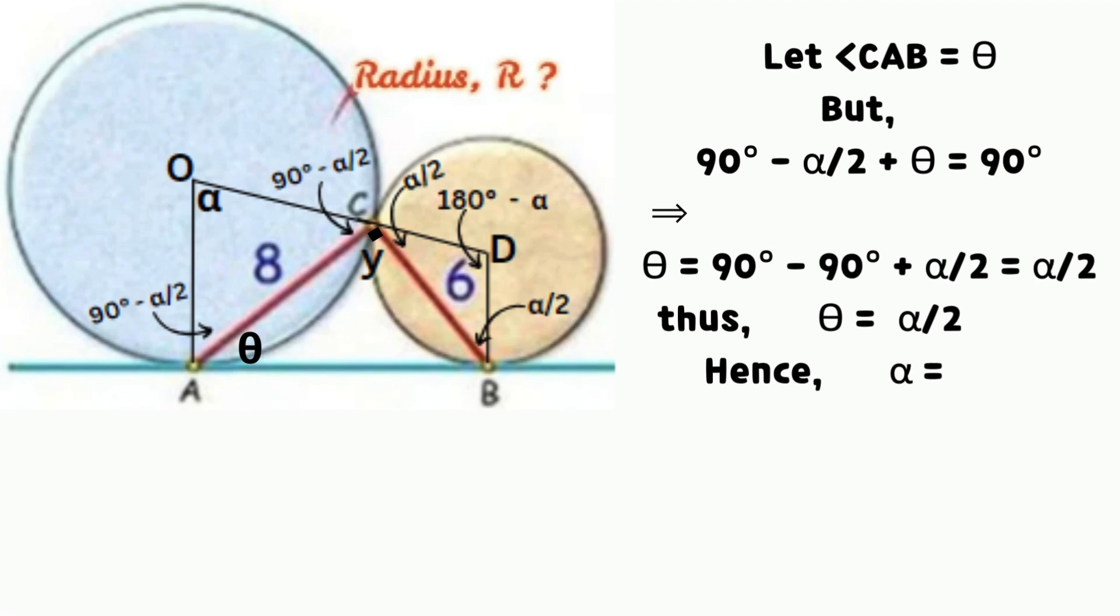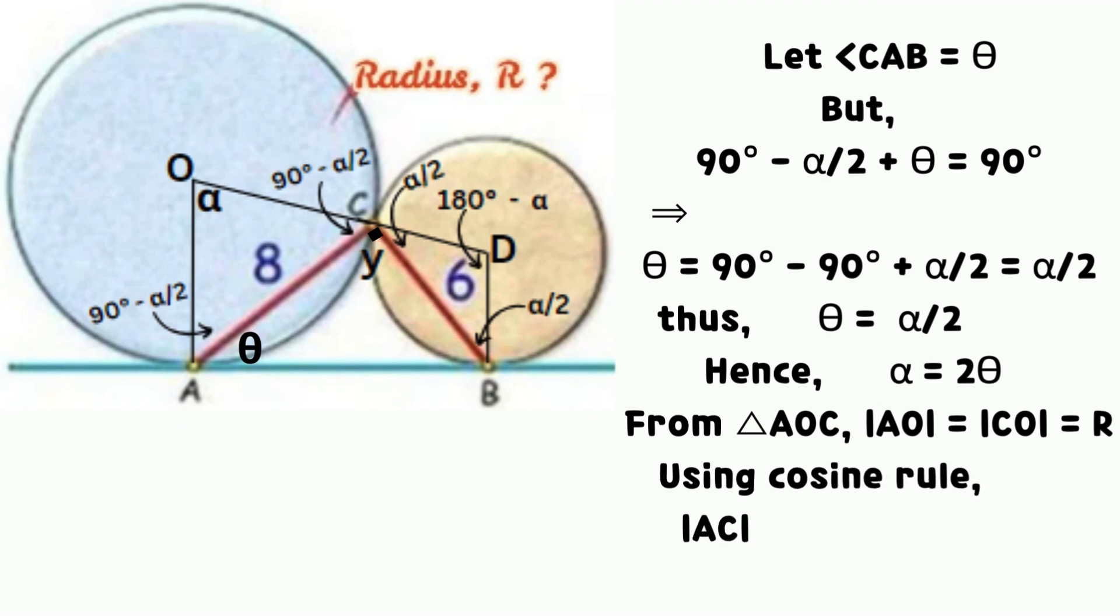From triangle AOC, using cosine rule, we find equation for the square of line AC. Replace angle alpha with 2 times angle theta.